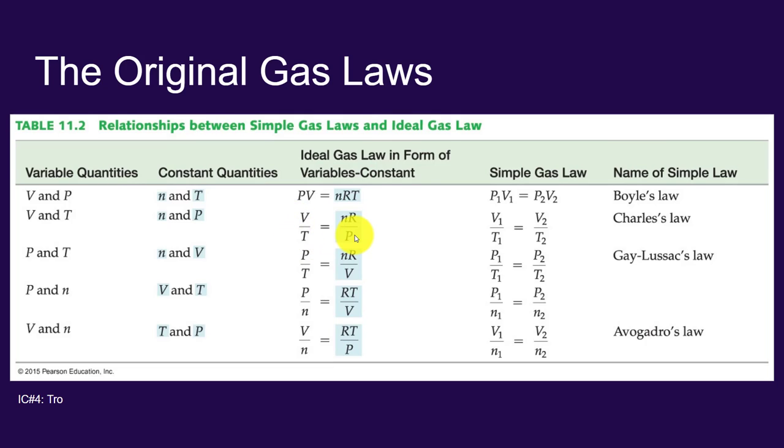That's Charles' law. Or you could rewrite this and say V1 over T1 equals V2 over T2. And you can do that with all of the gas laws. They all are included in the ideal gas law. You don't have to memorize any of them.